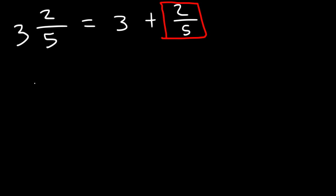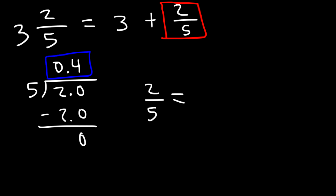So 2 over 5 can be expressed this way. Now how many times does 5 go into 2? 5 goes into 2 zero times. So we need to add a decimal point. Now let's add a zero. Now how many times does 5 go into 20? 5 goes into 20 4 times. 5 times 0.4 is 2. So if we subtract 2 minus 2 we get zero. So this means that 2 over 5 is equal to 0.4.